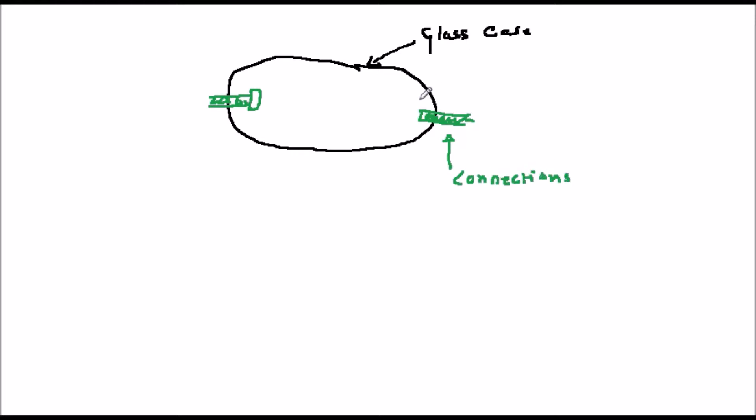This construction is called point contact and is illustrated on the screen. Metal from the thin wire diffuses locally into the germanium, doping it.